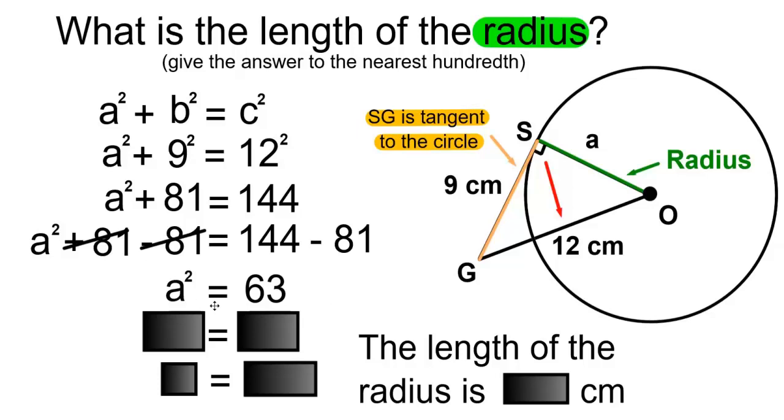To isolate the A, we'll do the opposite of squaring A, which is taking the square root of A squared. To take the square root of this side, we have to take the square root of 63 as well. The square root and squared of A will cancel, leaving us with A. And now we'll find the square root of 63.